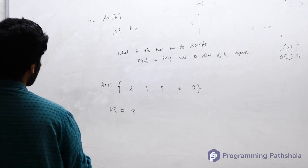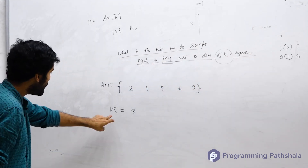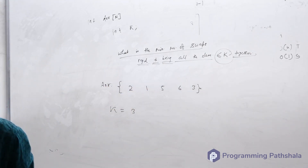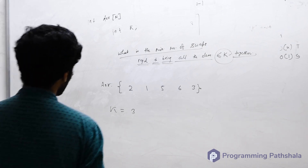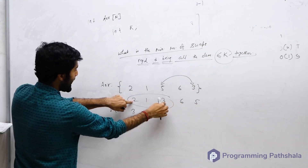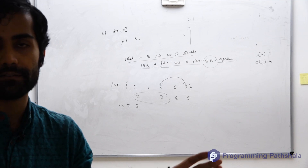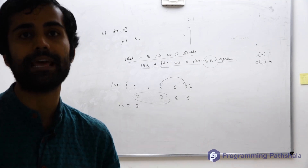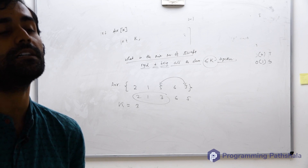How many elements are lesser than or equal to 3 in this array? There are three elements: 2, 1, and 3. The minimum number of swaps is just one — swap 5 with 3. You get 2, 1, 3, 6, 5 and now 2, 1, 3 are all together. I'm not worried about their permutation; they just need to be together in any contiguous subarray.